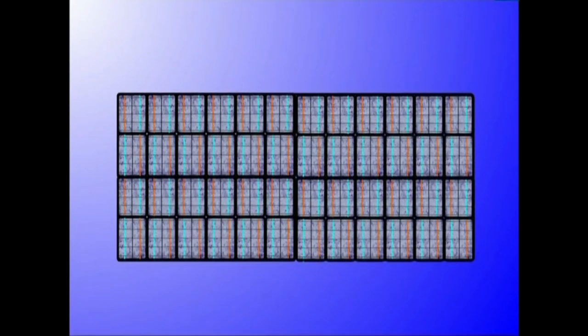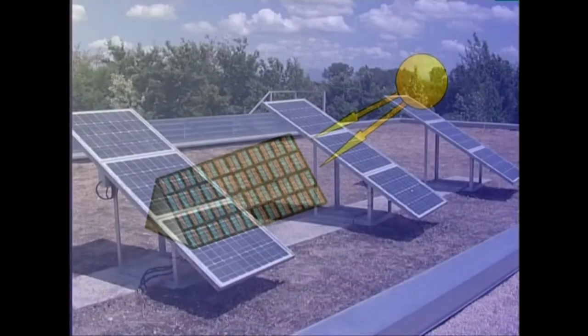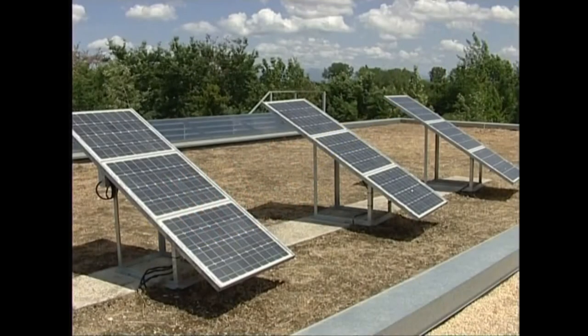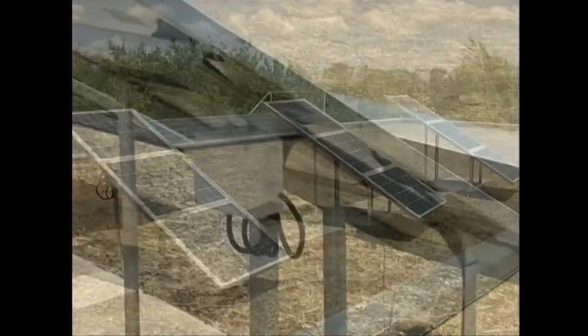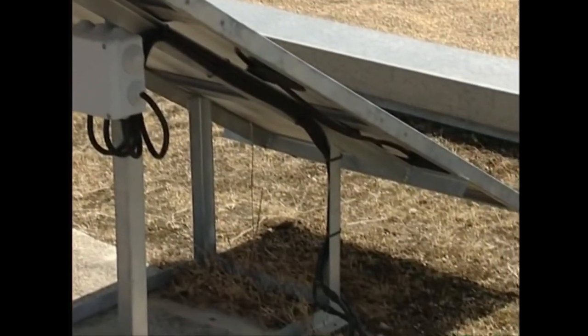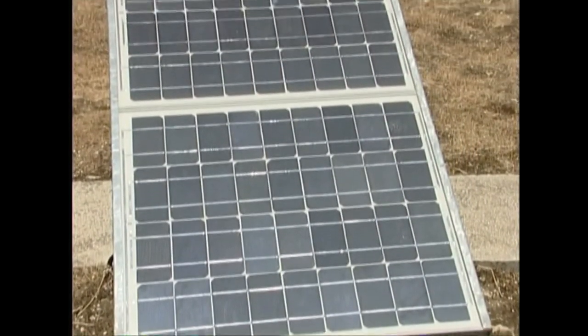Moduluak serian, paraleloan edo biak kombinatuta konektatuz, tentxio desberdina lor daiteke. Hori bai, lortzen den korrontea zuzena da, eta korronte alterno bihurtu behar izaten da. Modulu multzoek, konekzioek, babesleek eta gainerako osagarriek osatzen dituzte panelak.